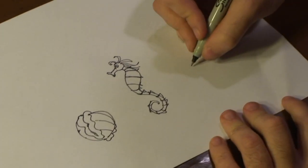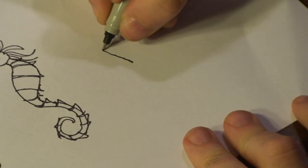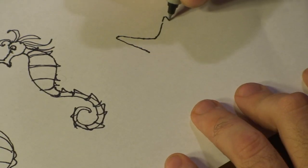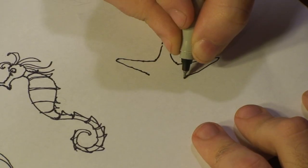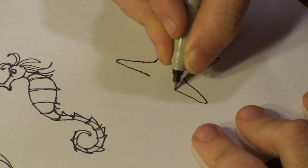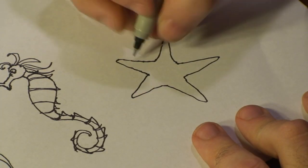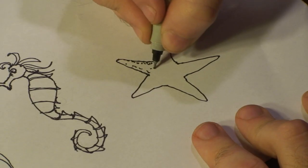Next thing we're going to have is a star, or starfish, sorry. So you know, just draw out a star. You want to keep it a little bit long. Like so. And then you want to add some dots to them, to show rough texture.